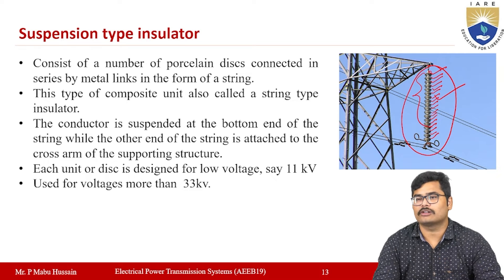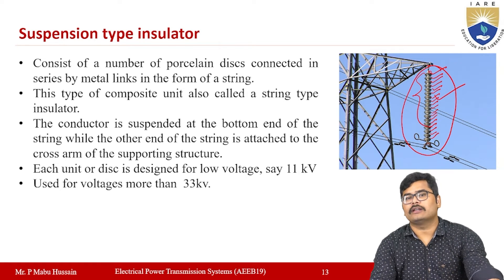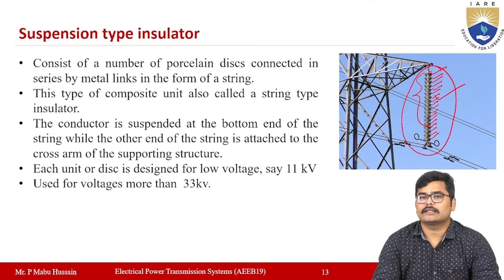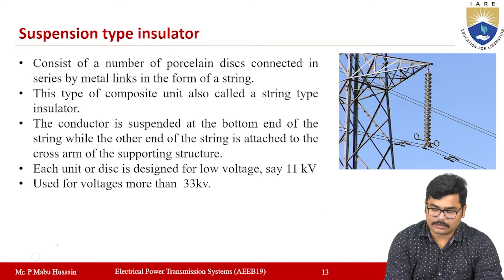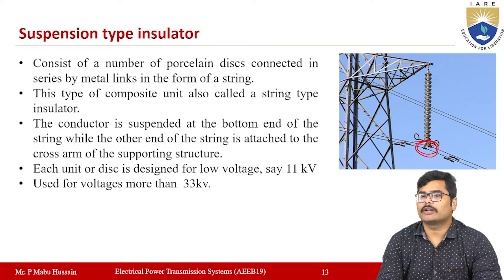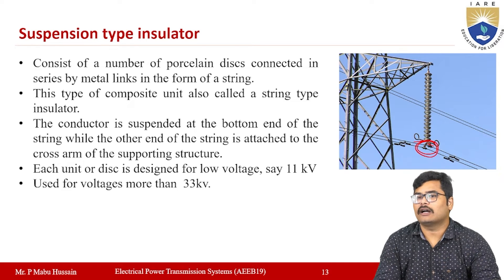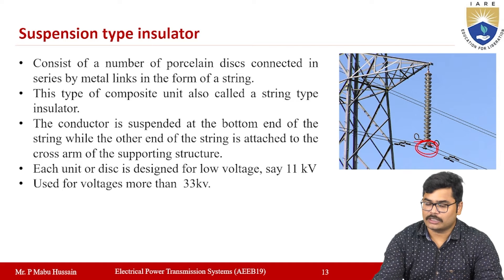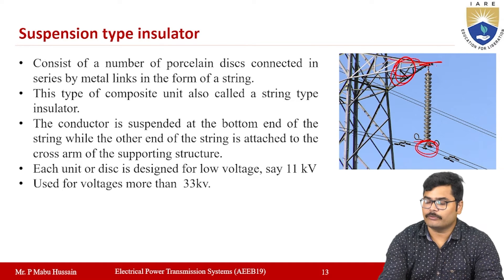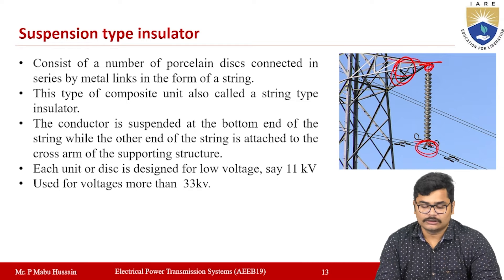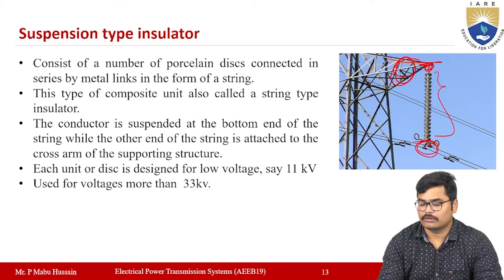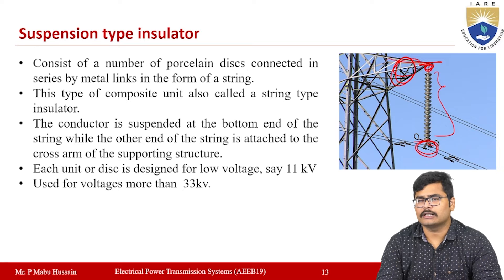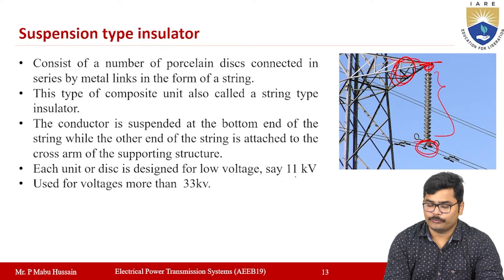In the suspension type insulator, the conductor is suspended at the bottom end of the string, while the other end of the string is attached to the cross arm of the supporting structure. Each disc in this suspension type insulator is designed to operate at a voltage level of up to 11 kV.